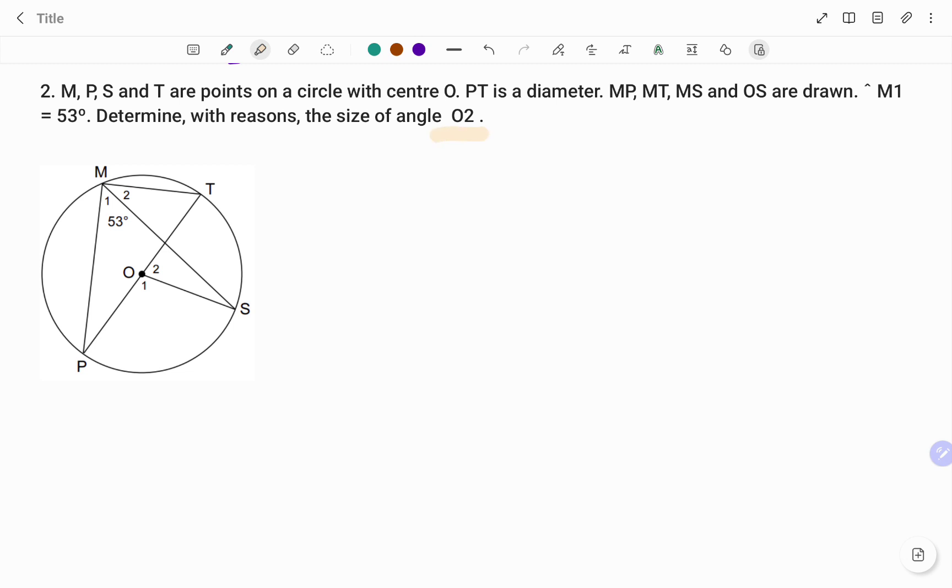I'm going to start with looking for the angle O1, and I'm going to use the circle theorem that states that angle at the center equals twice the angle at the circumference using the highlighted shape. So, I have angle O1 is equal to 2 times angle M1. And the reason being angle at center equals 2 times angle at circumference.